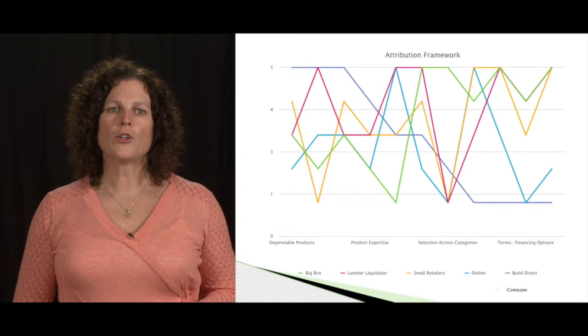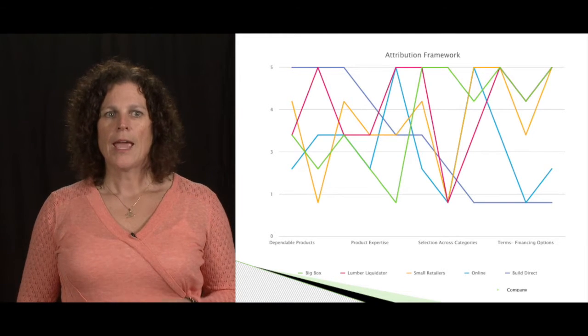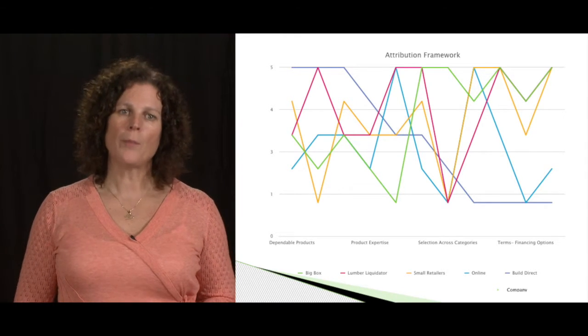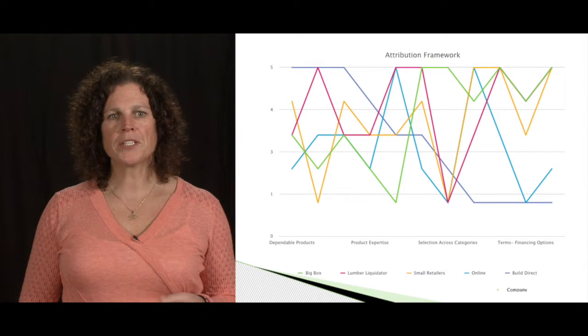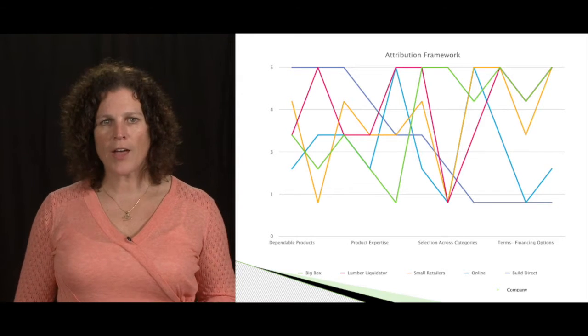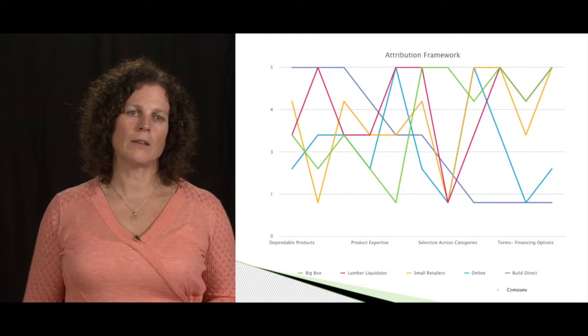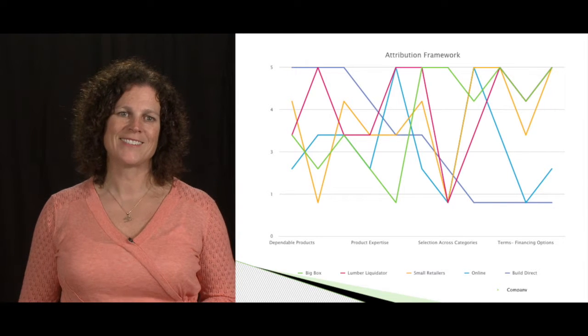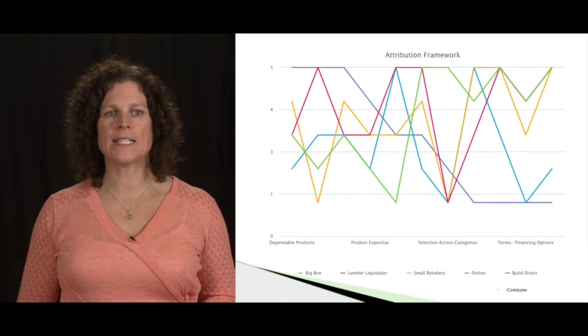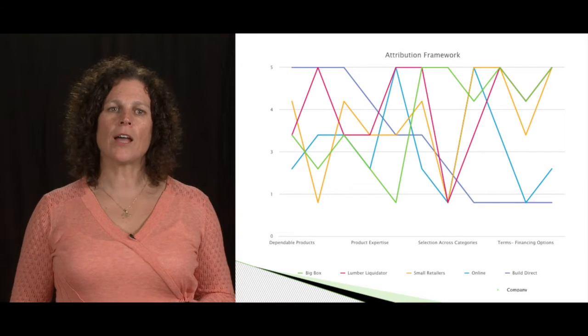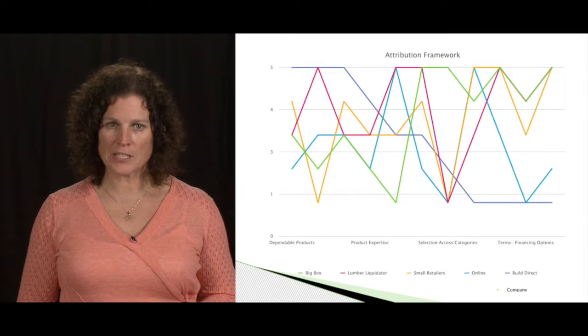The graph you're looking at right now is taking all the competitors in the marketplace as well as the company. The company is a clear bluish purplish line going from left to right as high as the highest five, coming all the way down to the right as one. They've decided on these actions. All the other colors are the other competitors. You can see how competitive this space is.